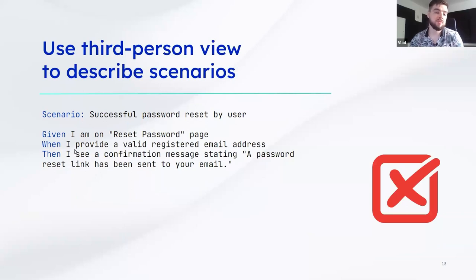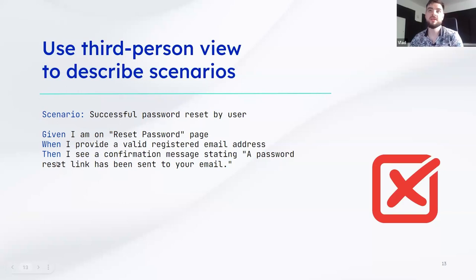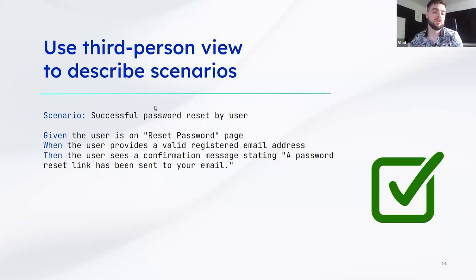We discussed the user-centric approach earlier. So in the correct scenario, you need to say what the user should do — you shouldn't use 'I', you should use the third-person view. This makes tests much easier to understand because you don't rely on 'I', which is unclear. It can be 'the user', 'the customer', or a specific user type if your system supports different users. You should always try to think from a user perspective and write your steps accordingly.